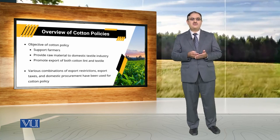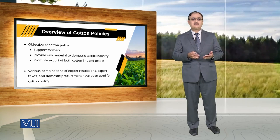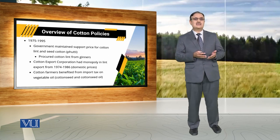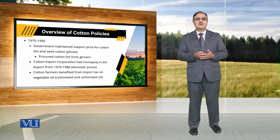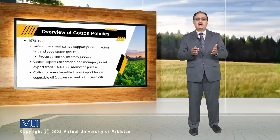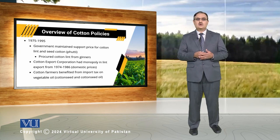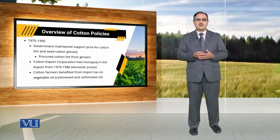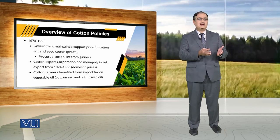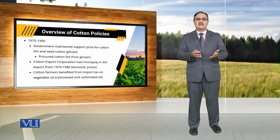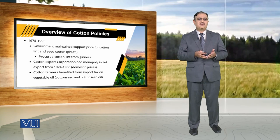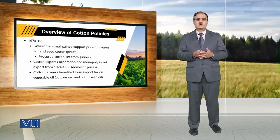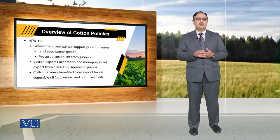There are various combinations of export restrictions, export taxes, and domestic procurement that have been used for cotton policy. From 1975 to 1995, the government maintained export prices for cotton lint and seed cotton, and procured cotton lint from the ginners. A Cotton Export Corporation held a monopoly on lint exports from 1974 to 1986, which resulted in an increase in domestic prices.